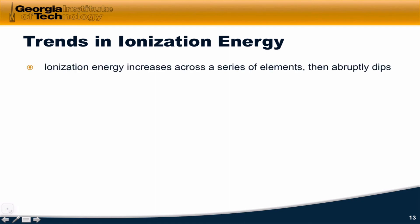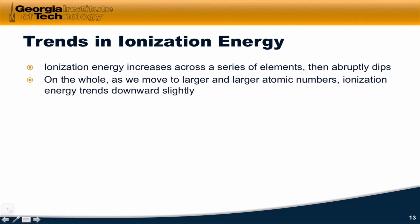In the first plot, we saw that the first ionization energy increases across a series of elements and then abruptly dips. Looks like a sawtooth wave. Something like this. On the whole, though, as we move to larger atomic numbers, ionization energy trends downward.